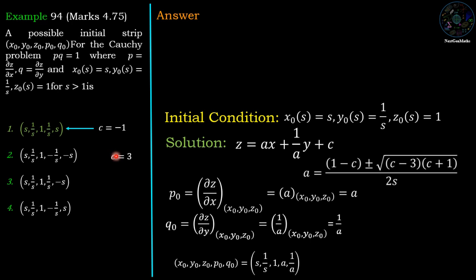Taking c = 3: 1 − 3 = −2, and c − 3 = 0, so the square root term again vanishes. We get as = −2/(2s), so a = −1/s and 1/a = −s. This gives option 2: (s, 1/s, 1, −1/s, −s), which is also correct.